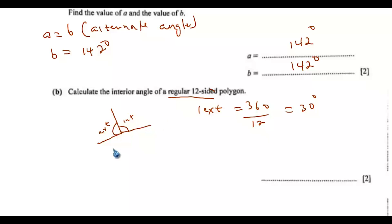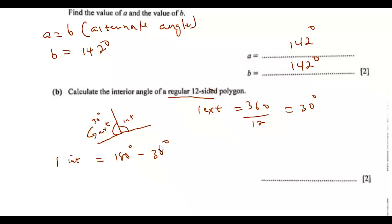Now we know one exterior angle equals 30 degrees. We can calculate one interior angle: one interior angle = 180 degrees minus 30 degrees = 150 degrees. So the interior angle of a regular 12-sided polygon is 150 degrees. That is the solution to part b.